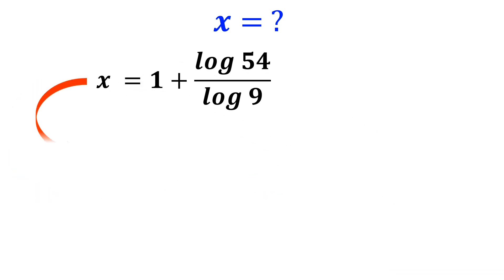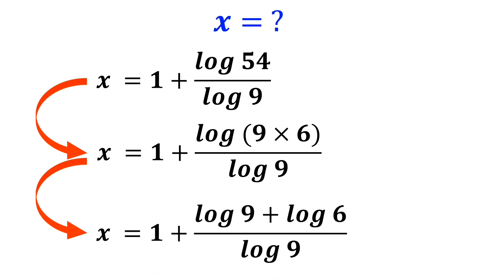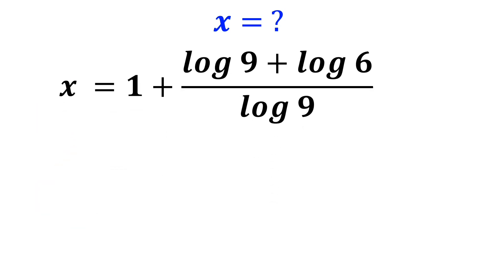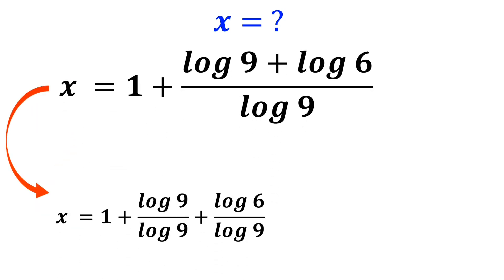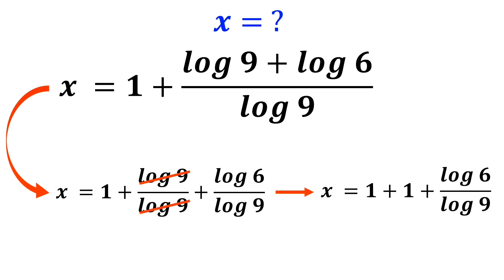Once again, this equation is equal to 1 plus log of (9 times 6) over log of 9. We can write this expression as x equals 1 plus log of 9 plus log of 6 over log of 9, which simplifies to x equals 1 plus log of 9 over log of 9 plus log of 6 over log of 9. The log of 9 terms cancel out, and it simplifies to x equals 1 plus 1 plus log of 6 over log of 9.